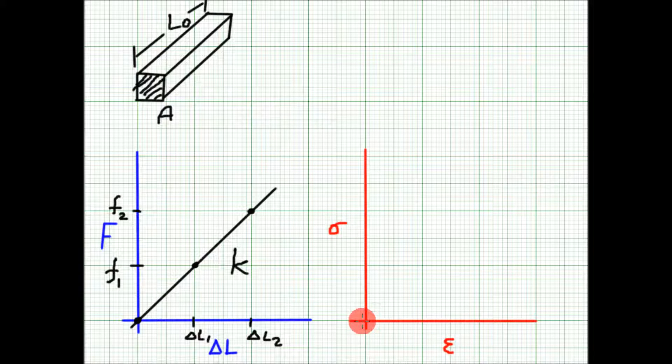Initially the stress and strain are both zero. Let's say we apply a force F1, so the stress sigma 1 equals F1 divided by A.